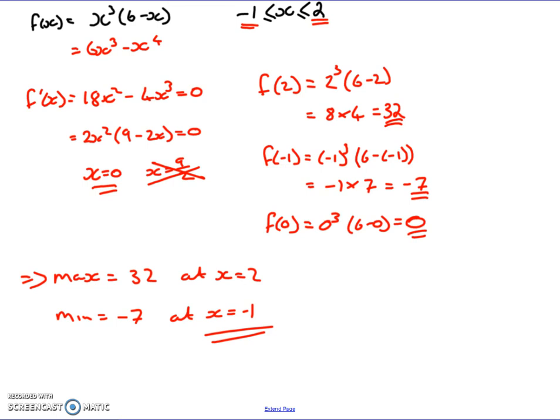That key final stage is something you have to make sure you can do: communicate the answer clearly, state where the maximum is, where the minimum is, and where in your range of values each one occurs.